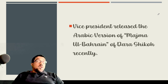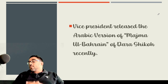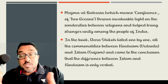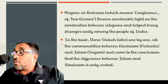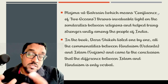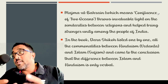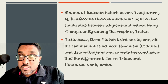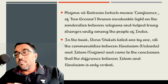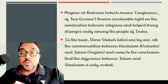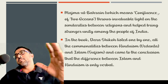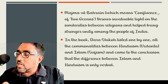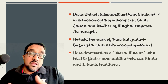Majma ul Bahrain literally means 'the confluence of two oceans.' It basically throws invaluable light on the similarities between Islam and Hinduism, trying to help religious cooperation, coexistence, and unity among Indians. In the book, Dara Shikoh even attempts to list one by one all the commonalities between Hinduism and Islam. He eventually came to the conclusion that the difference between Islam and Hinduism is essentially verbal, but nothing spiritual.